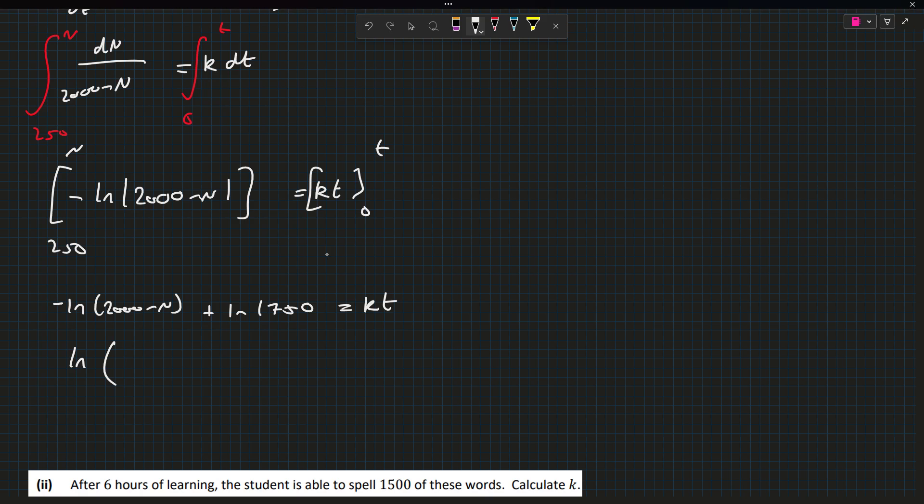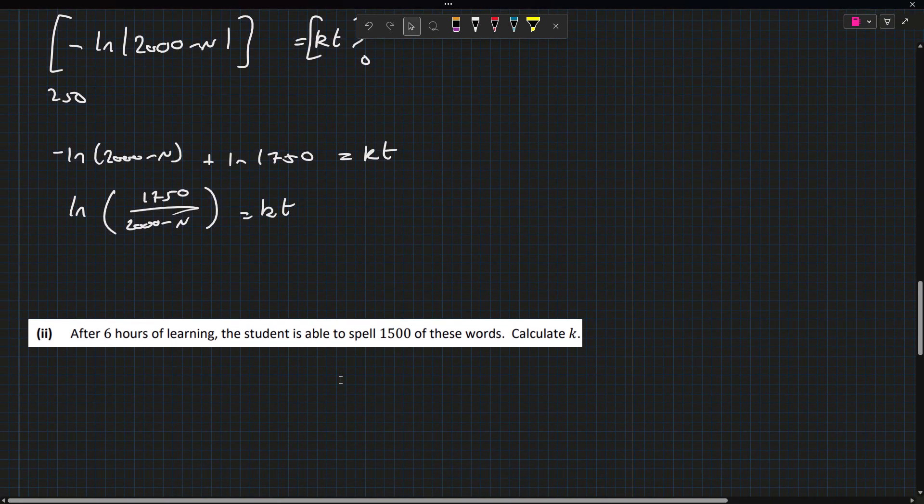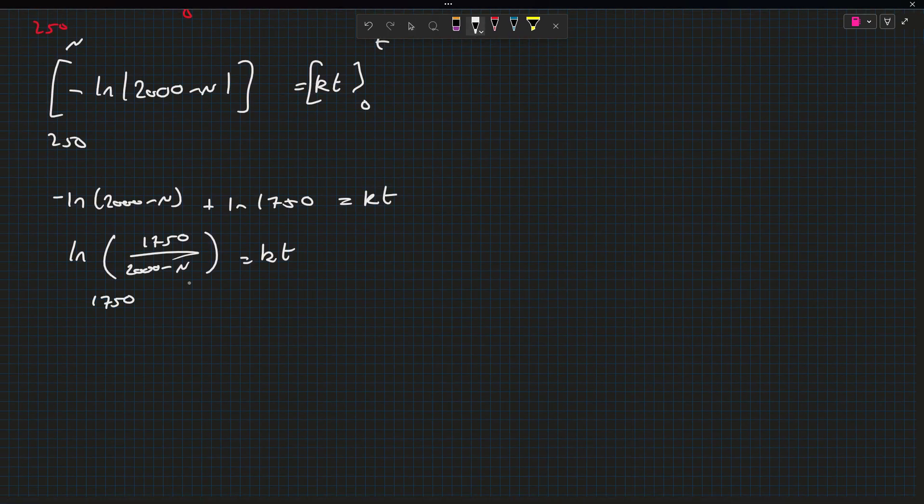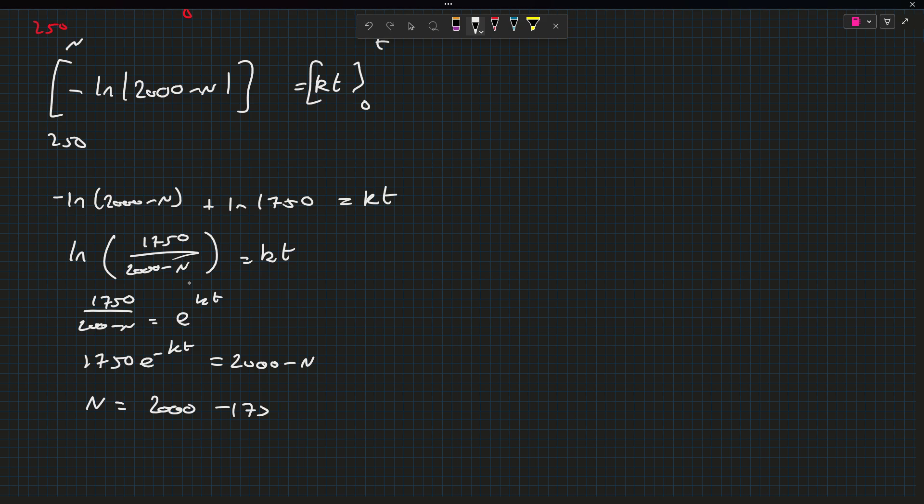So this should be minus log of 2000 minus n plus log of 1750. So combining these, we get log of 1750 over 2000 minus n equals kt. Now we're looking for in terms of n. So we're going to have to go down this. So if we e both sides, we get 1750 over 2000 minus n is e to the kt. So multiply by 2000 minus n divided, you get 1750 equals 2000 minus n times e to the kt. Of course to find n, we can subtract 2000 and then flip the sign. So we get n is 2000 minus 1750 e to the minus kt.